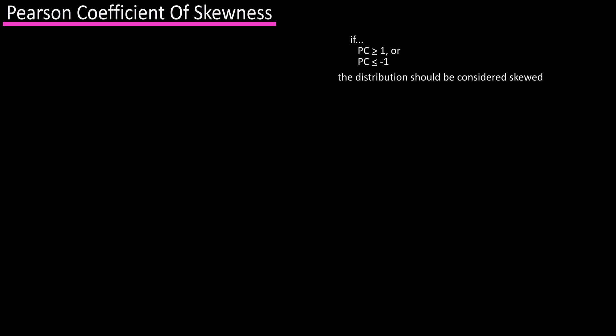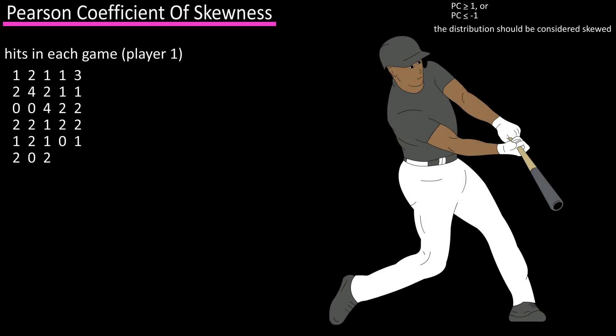Here's a data set for a baseball player's hits for every game over a one month period, and we want to know if the distribution of this data is normally distributed. The mean is 1.57, the median is 2, and the standard deviation is 1.03.